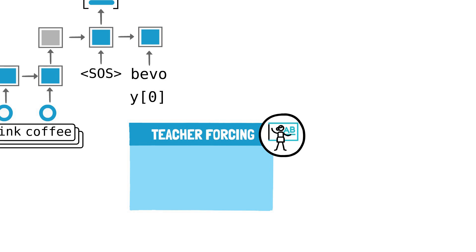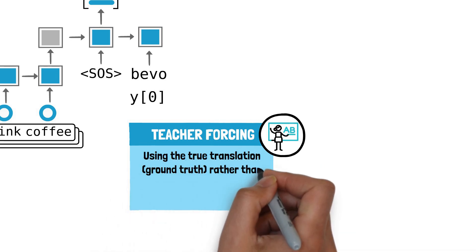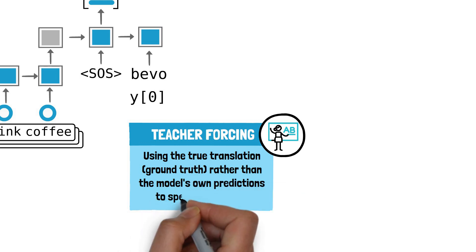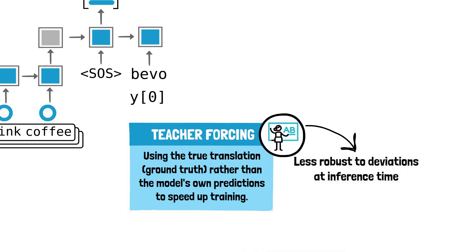This can speed up training and help the model learn more effectively, as it is always guided by the correct sequence. However, it can also make the model less robust to errors or deviations when used in the real world since it always expects the correct previous output. The issue is known as exposure bias.